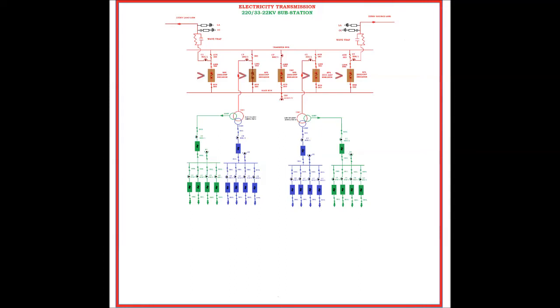If we look at the single line diagram, we can see that the source line, load line, and both transformers are charged through their circuits except the TBC breaker.